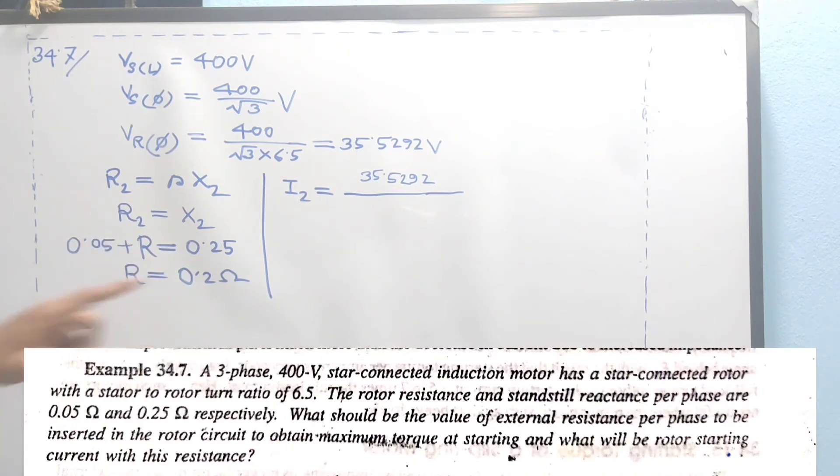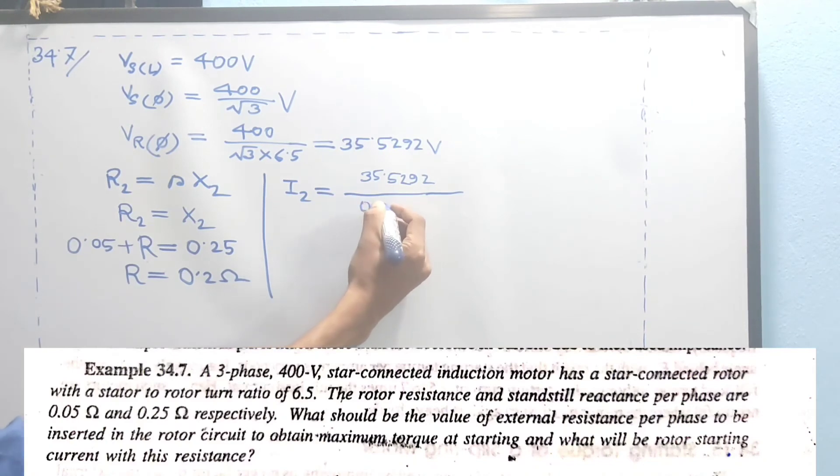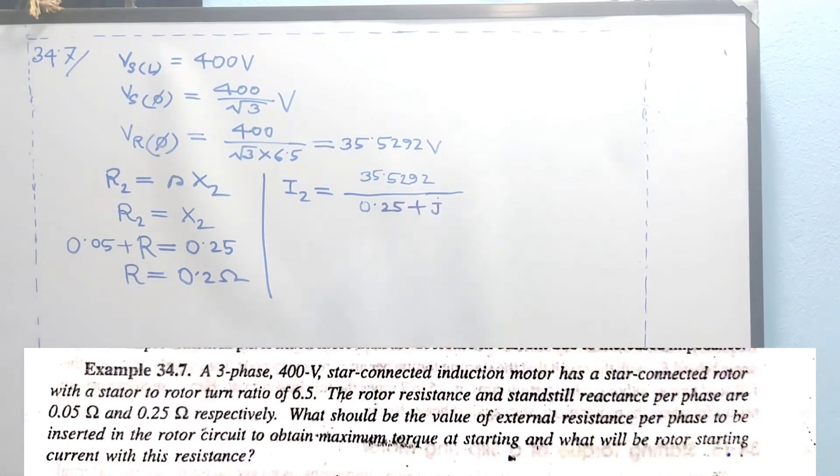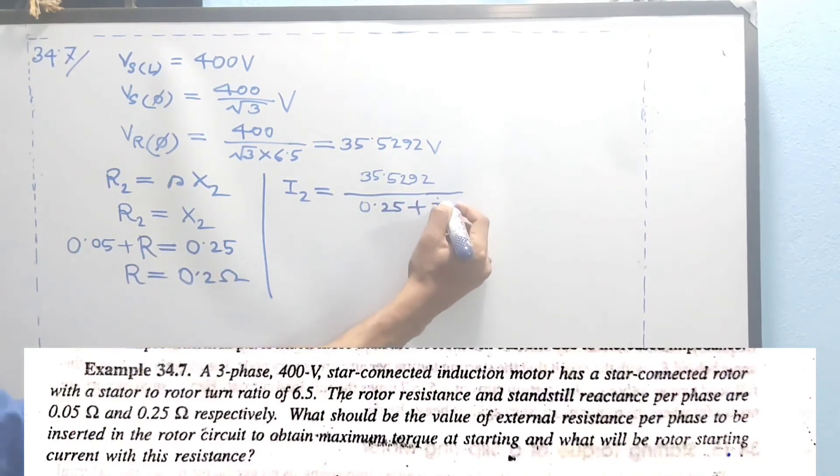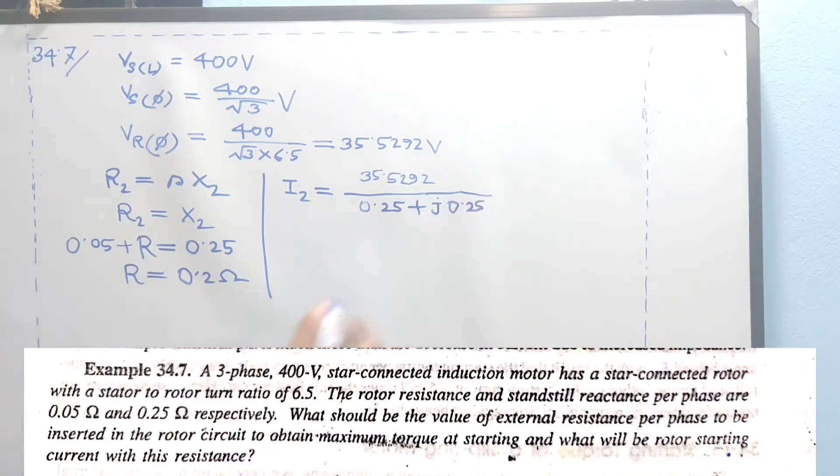The impedance is 0.05 plus 0.2 plus j times 0.25. This equals 0.25 plus j0.25.